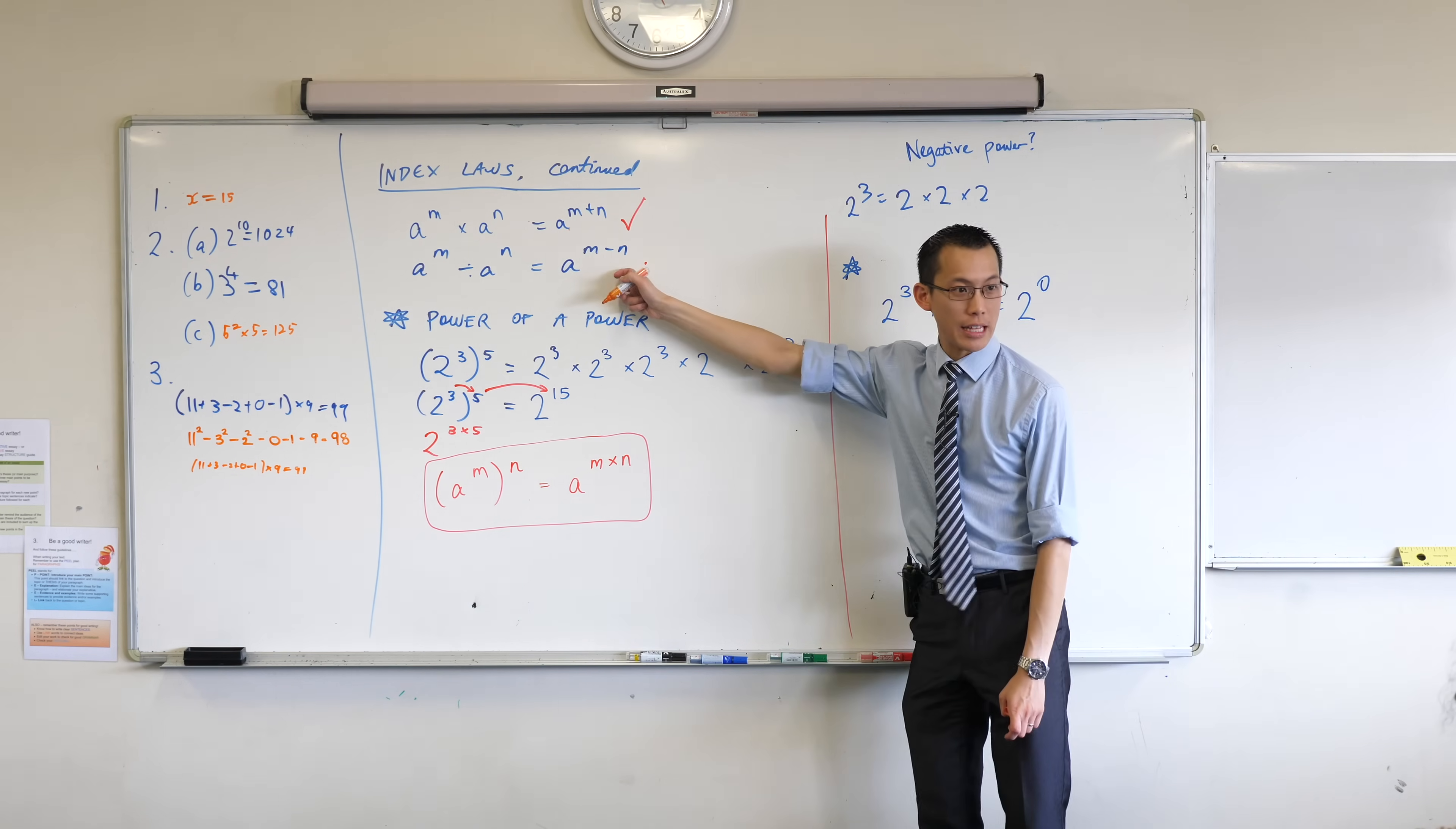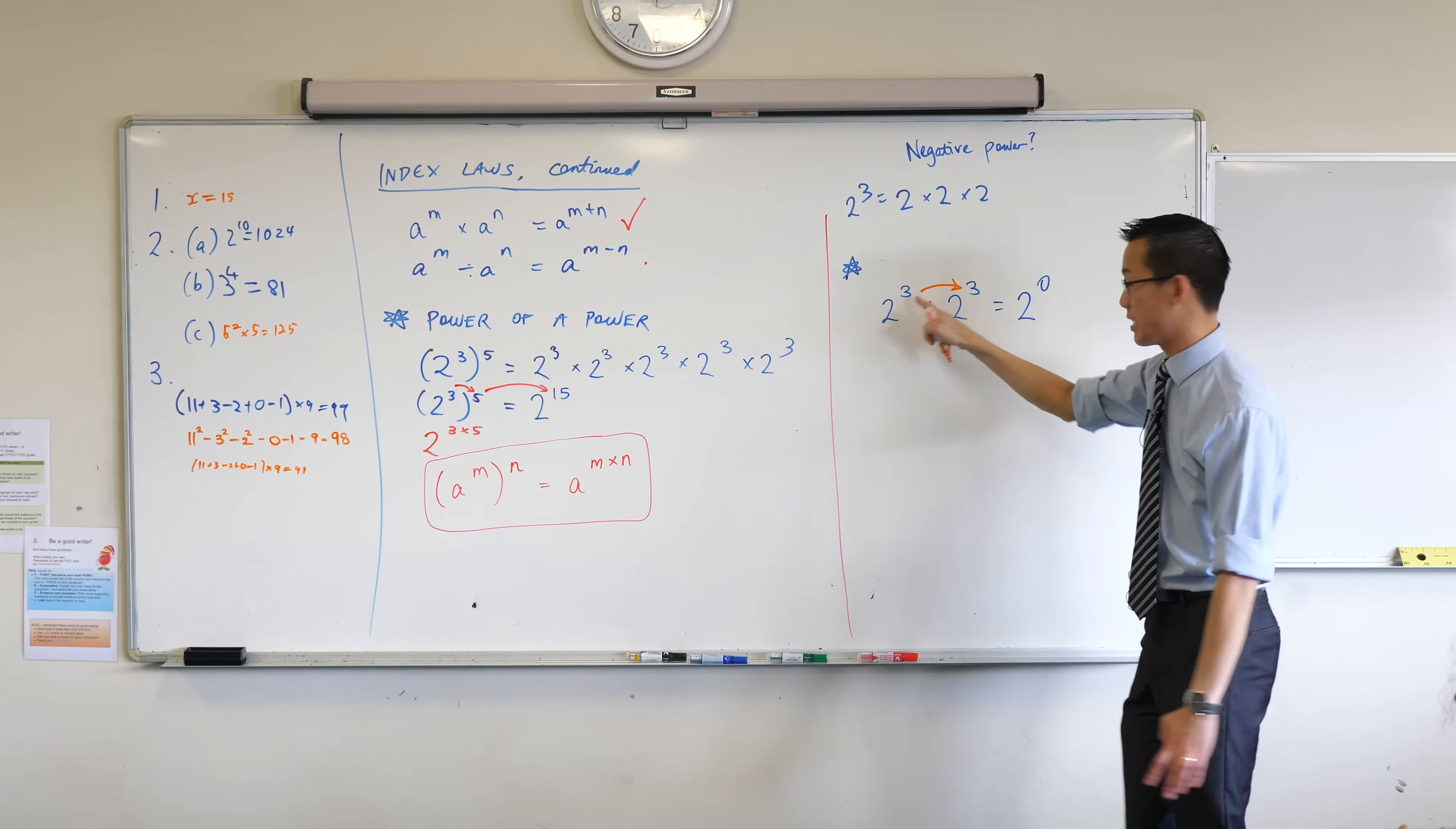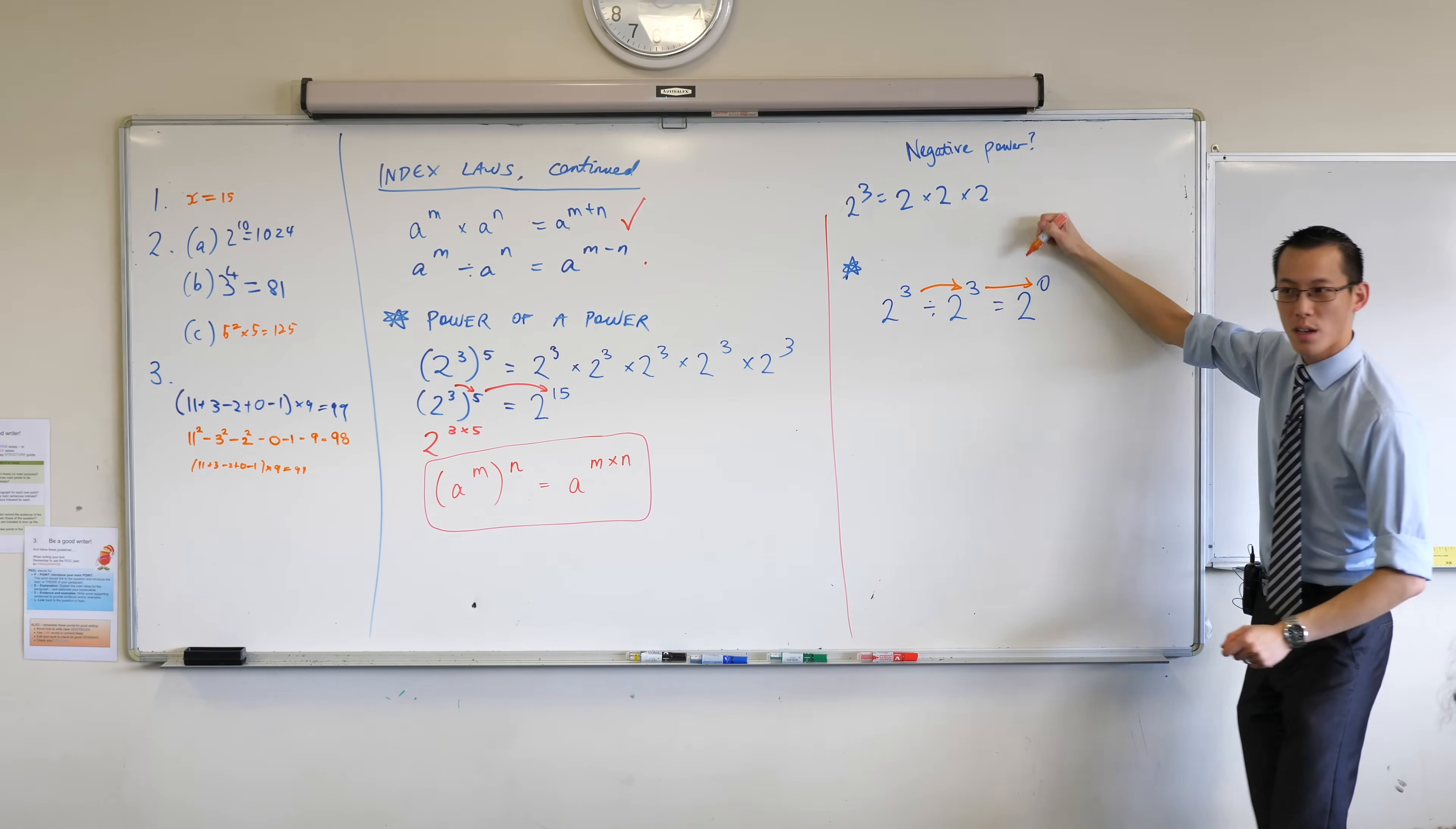Right. So when we divide things which have the same base, right, we subtract their powers. Yeah? So 3 take away 3, last I checked, is zero, right? So that does follow.